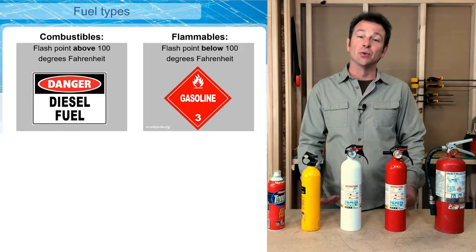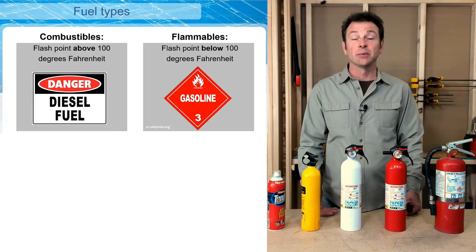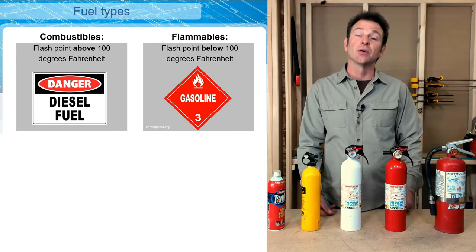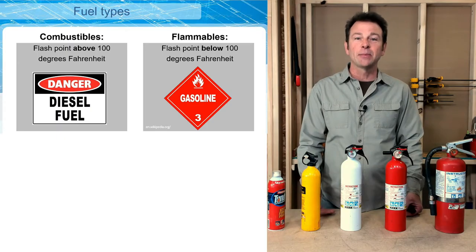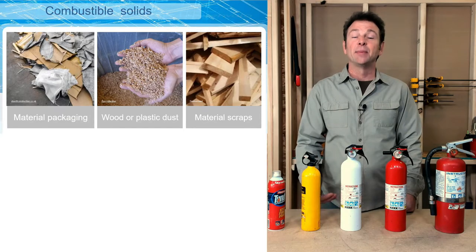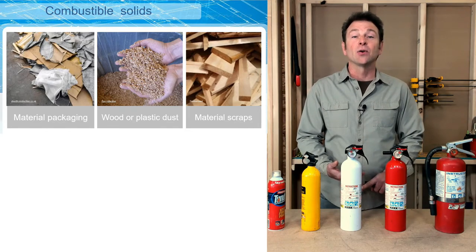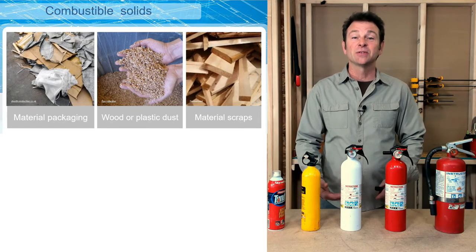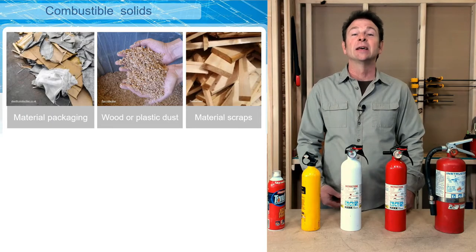Next up is fuel. There are two types to talk about: combustibles and flammables. Combustibles are materials that will burn once a fire starts, while flammables are ones that will start burning very quickly. On a work site, combustible solids include material packaging, sawdust, plastic dust from cutting materials, and the cutoffs or scraps — the waste created when we're building.